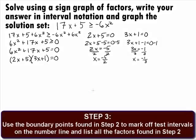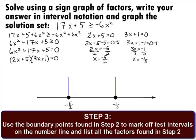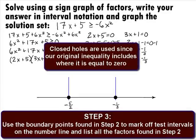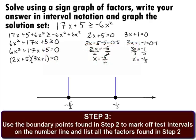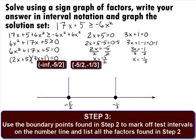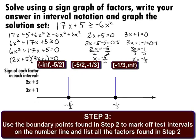In Step 3, we use the boundary points from Step 2 to mark off test intervals on the number line and list all the factors found in Step 2. We have marked off our boundary points of negative 5 halves and negative 1 third using closed holes, because our original inequality included where it is equal to 0. Our boundary points mark off three sections: negative infinity to negative 5 halves, negative 5 halves to negative 1 third, and negative 1 third to infinity. We will list the two factors, 2x plus 5 and 3x plus 1, on the side.